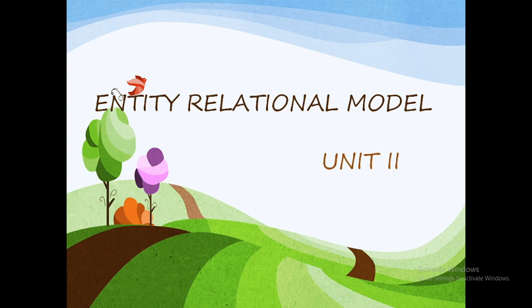Entity means an object. A relation means a connection between entities — a connection between two or more entities. So entity means an object, and relation means a connection between entities, where an object means a thing or a person.